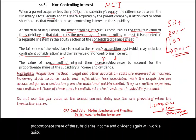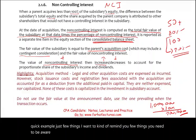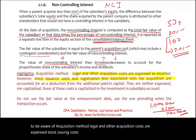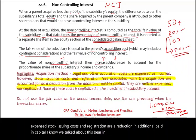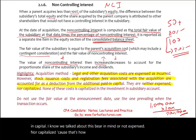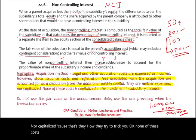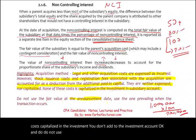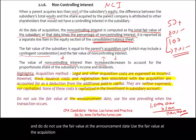A few key reminders under the acquisition method: legal and other acquisition costs are expensed; stock issuing costs and registration fees are a reduction in additional paid-in capital — they are not expensed nor capitalized into the investment. Also, always use the fair value at the acquisition date, not the announcement date, when recording the transaction.